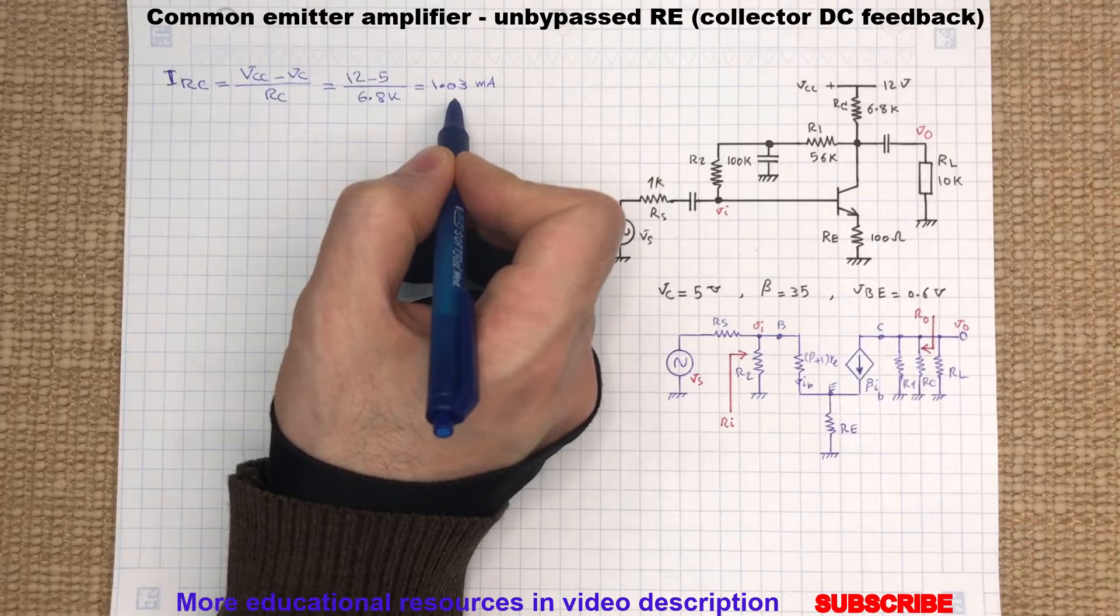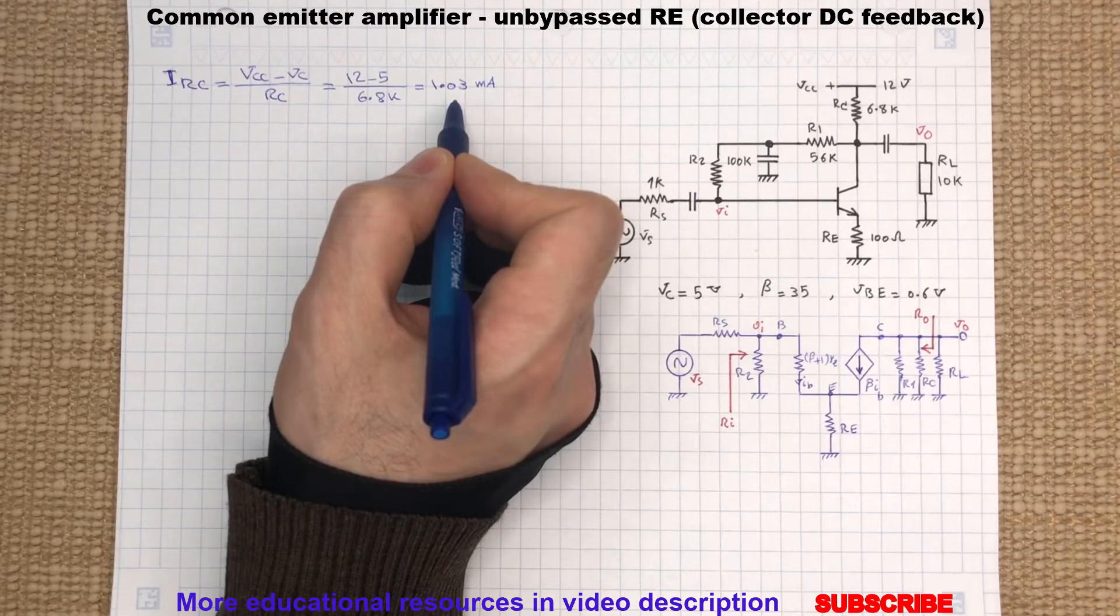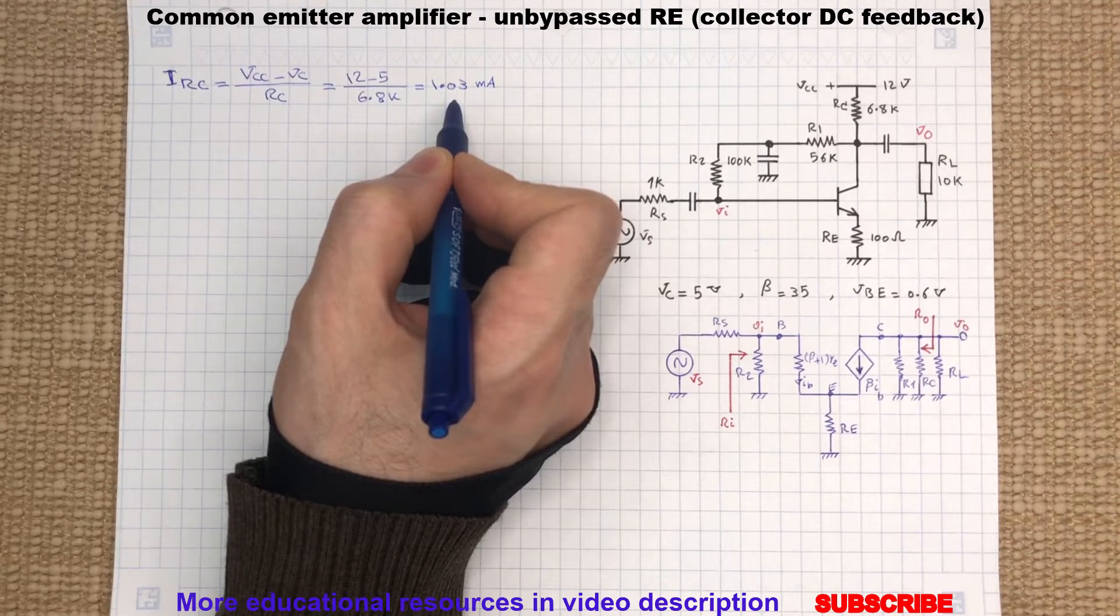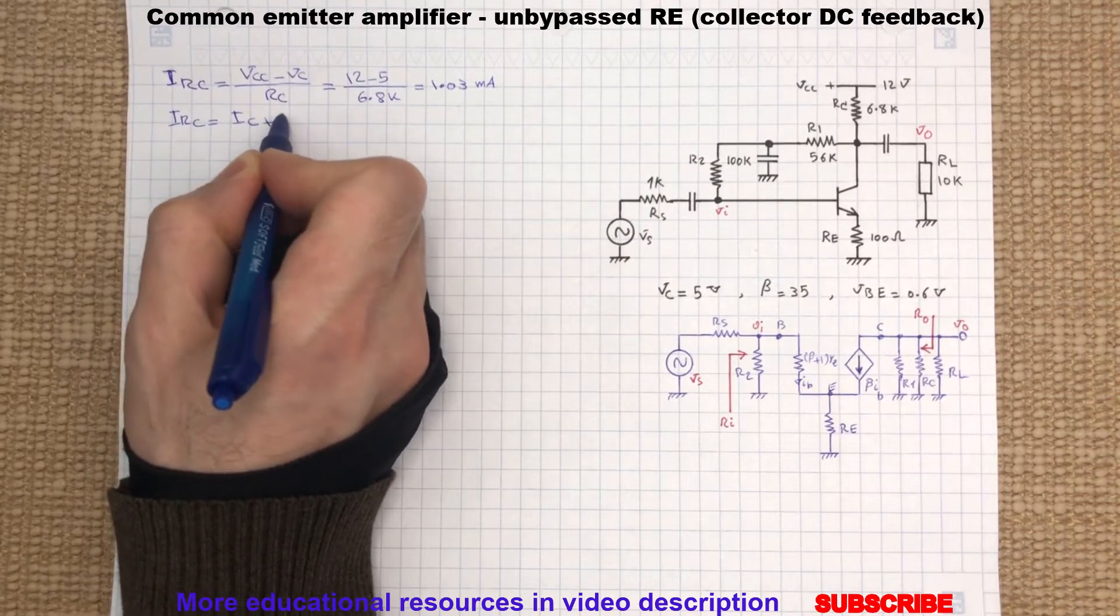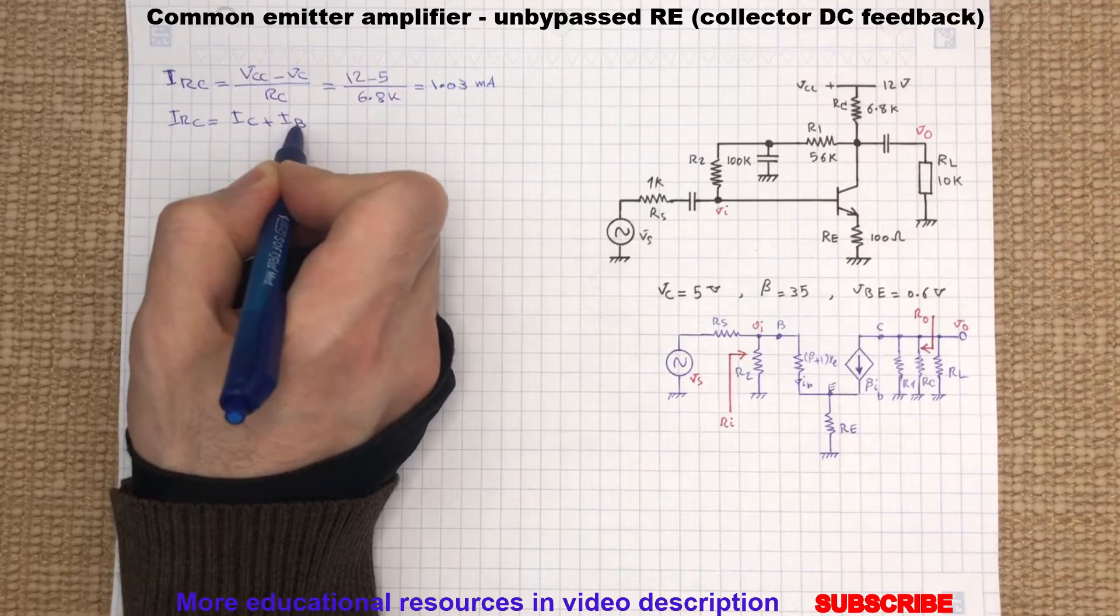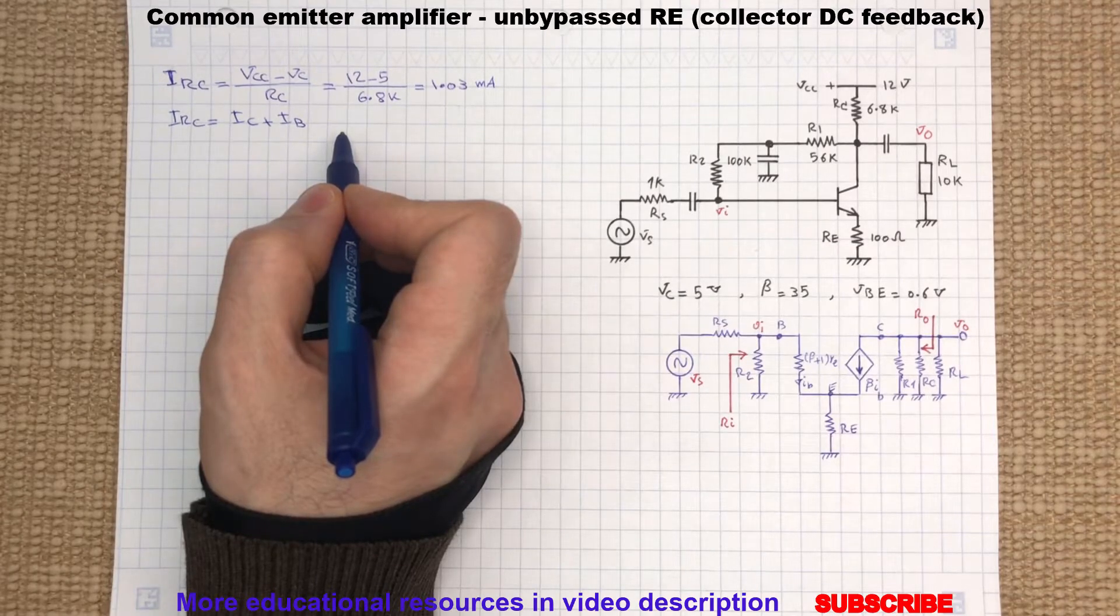And this current includes base and the collector current, which is the same as the emitter current.